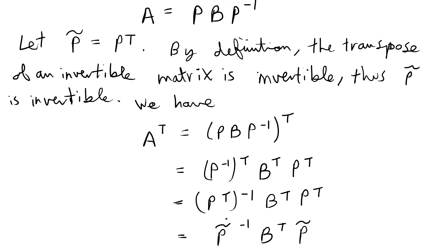In our final step, we compare this expression for A transpose with the original similarity formula. A corresponds to A transpose, P corresponds to P̃ inverse, B corresponds to B transpose, and P inverse corresponds to P̃. This matches the form needed for matrix similarity.